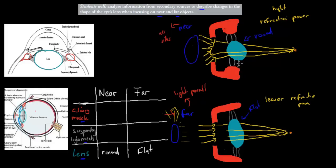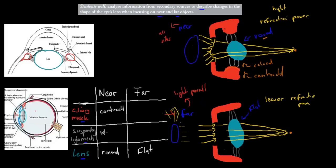For near vision, the ciliary muscles are contracted — you can see this as a bulge, like a bicep. Because the muscles are contracted, the suspensory ligaments are relaxed and loose, meaning they're not pulling on the lens. With no tension on the lens, it takes on a rounder shape. So: contracted ciliary muscles → loose suspensory ligaments → round lens.